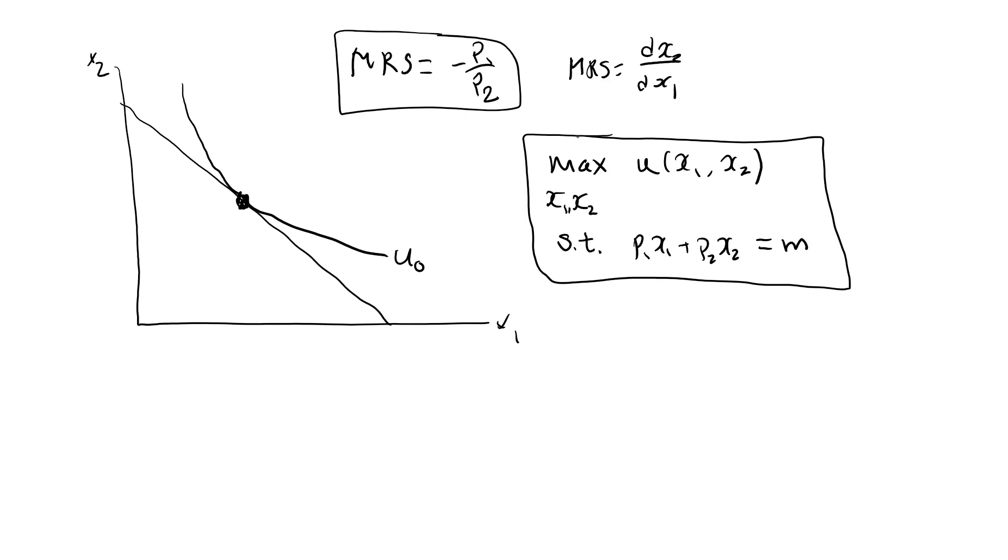We can use the method of Lagrange to solve this constrained optimization problem. We create a new function called the Lagrangian, typically denoted by some sort of a fancy L. This will be a function of the two x variables.